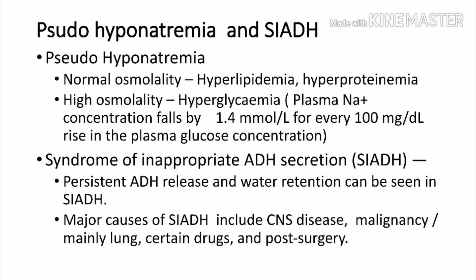Pseudo-hyponatremia is defined as hyponatremia with normal or high osmolality. Normal osmolality pseudo-hyponatremia is due to hyperlipidemia or hyperproteinemia. High osmolality is mainly due to hyperglycemia or mannitol treatment. Whenever you have hyponatremia, osmolality should be low; if it is normal or high, it is pseudo-hyponatremia.